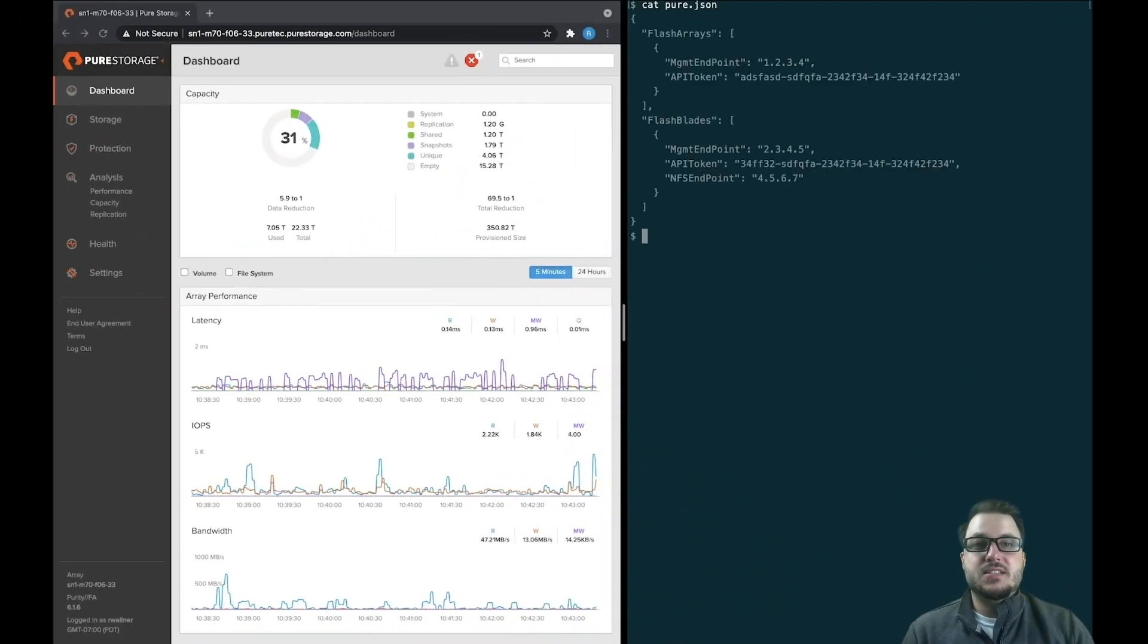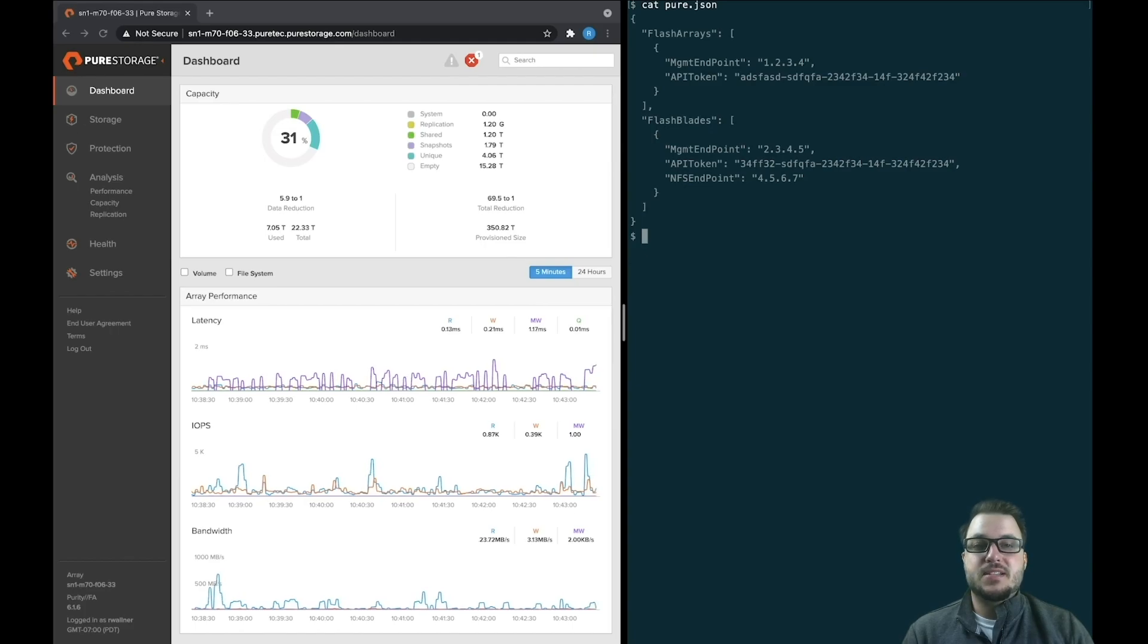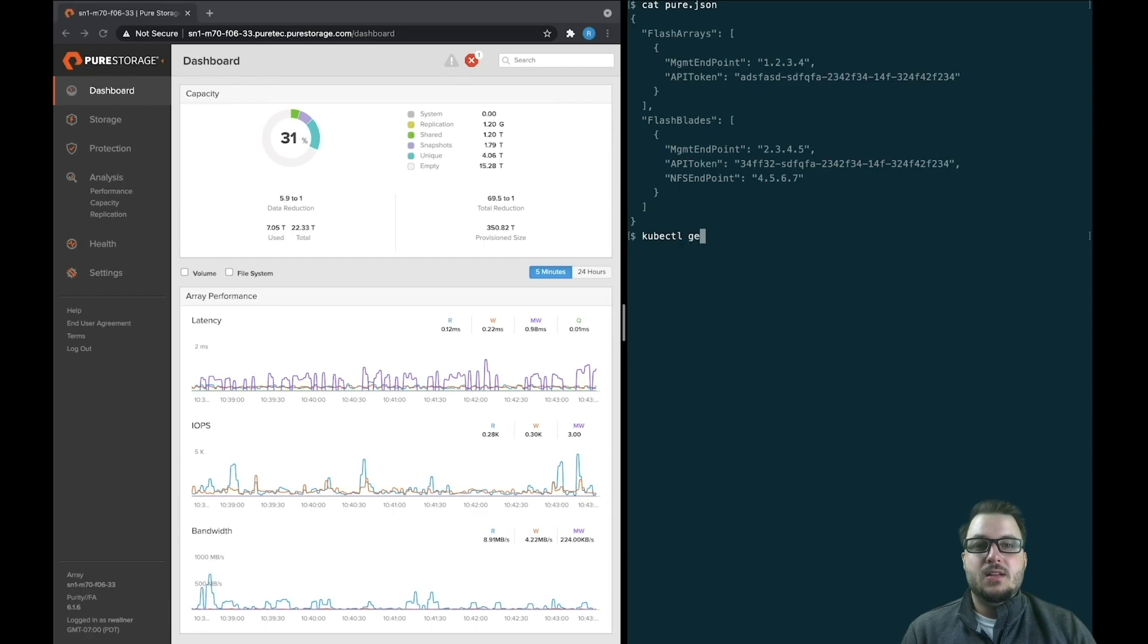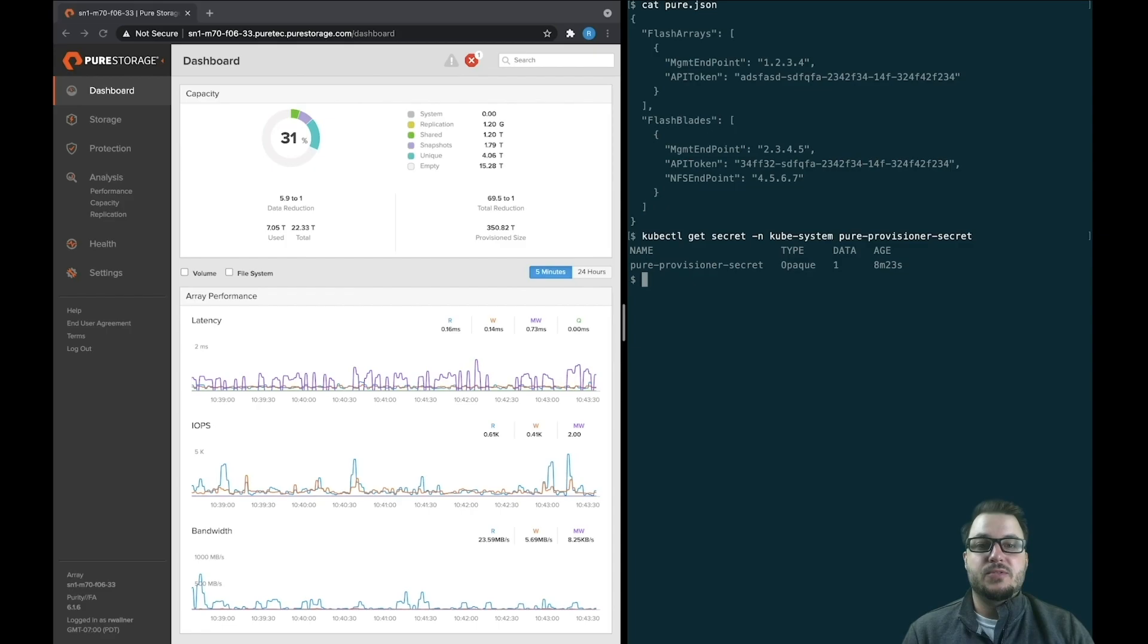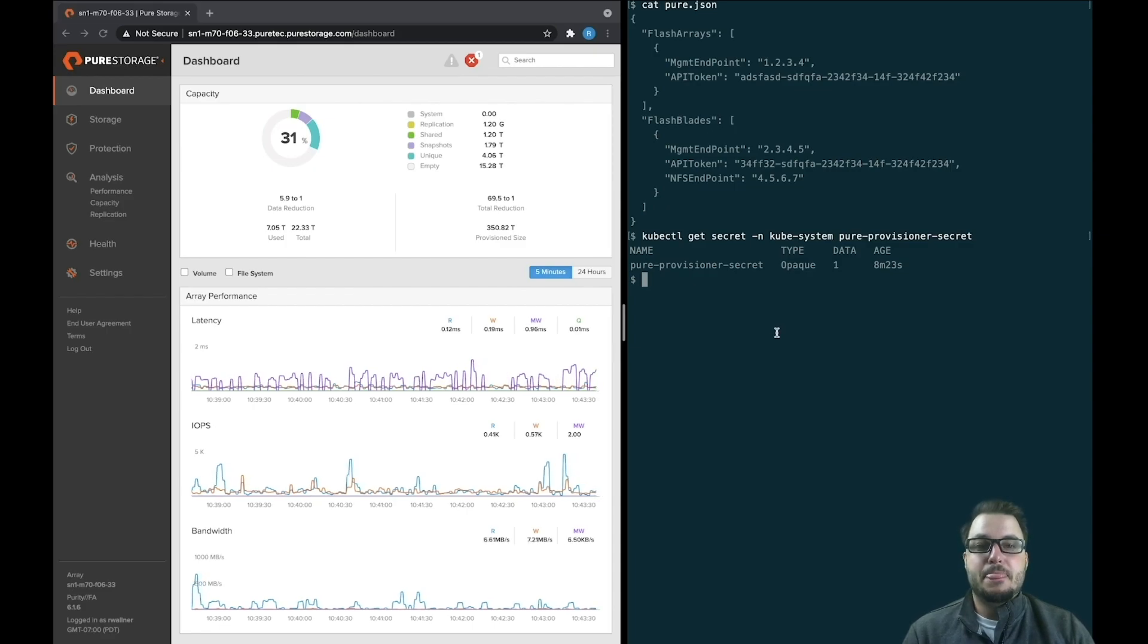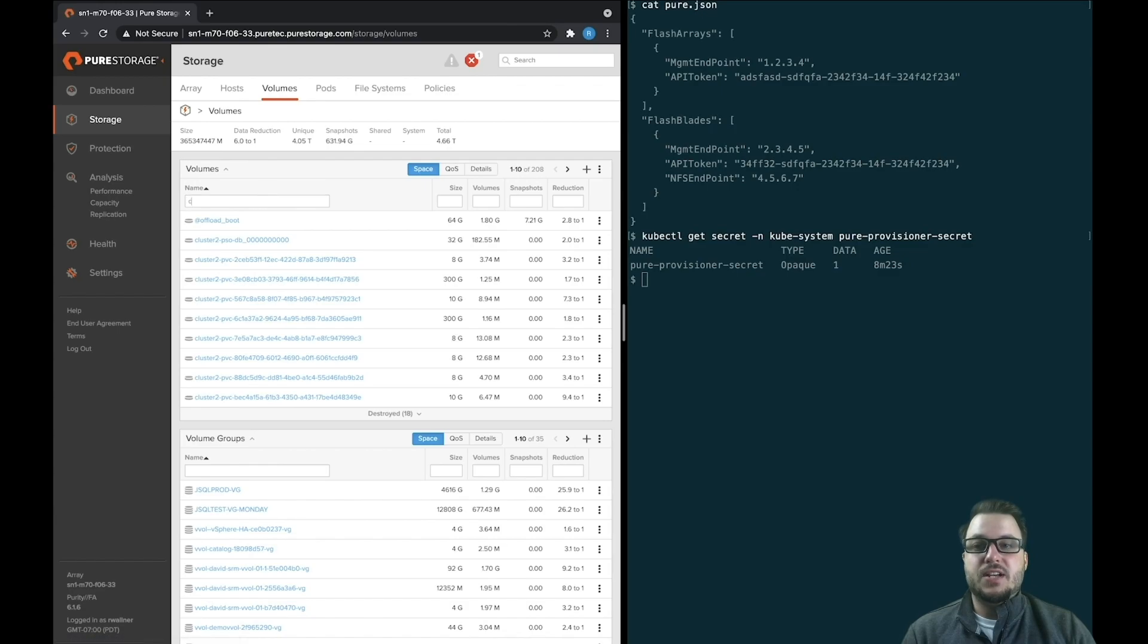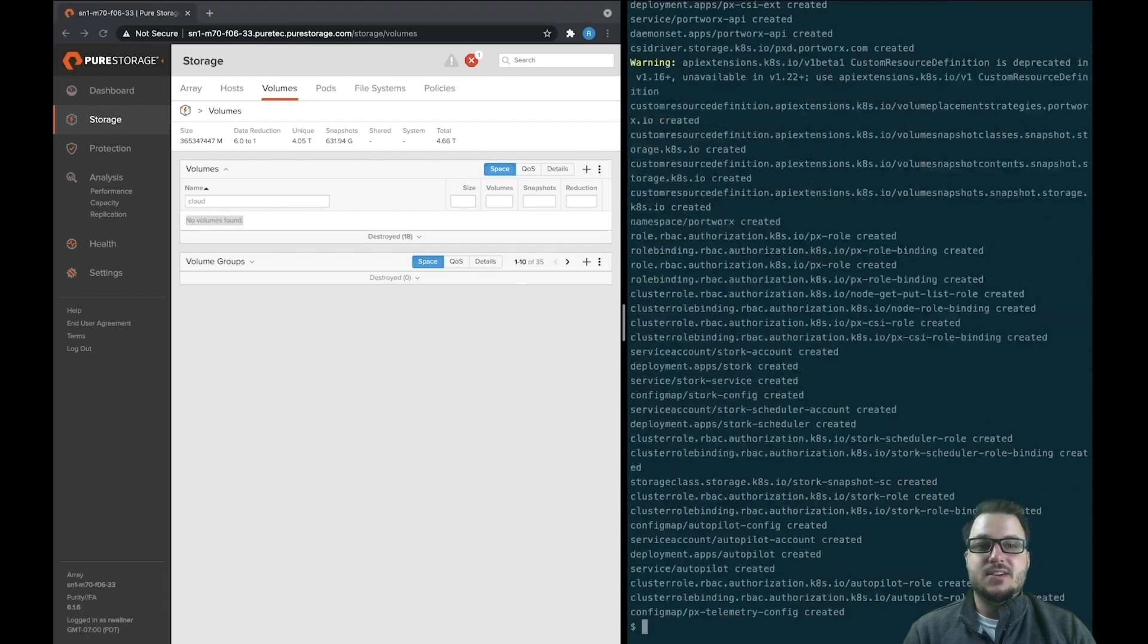The first thing you're going to need is a pure JSON file, which points to your flash arrays management endpoints and contains the API tokens needed to access those clusters. Once you have this file, it needs to be uploaded into the kubesystem namespace in order for Portworx to be aware of it. Next, we're going to take a look at the volumes within our flash array showing that no existing PX cloud volumes are found. This is to show you that Portworx is in fact provisioning these automatically when installed.